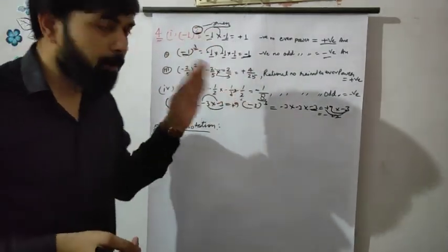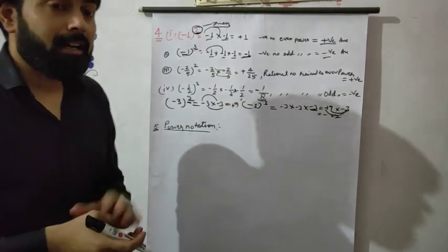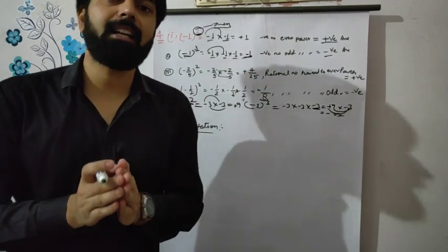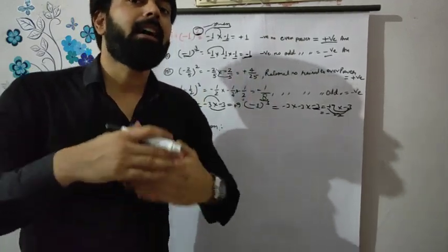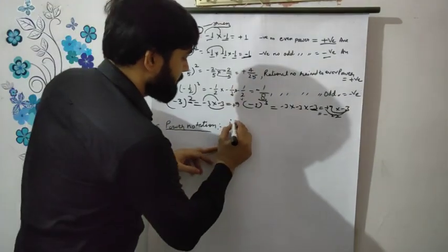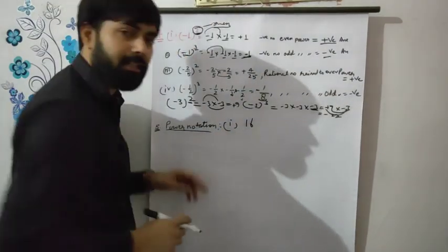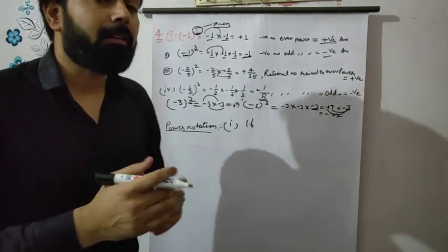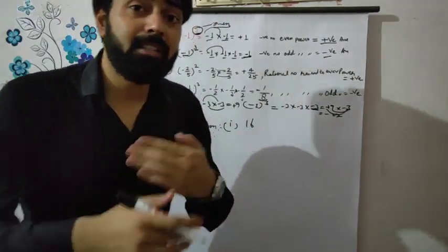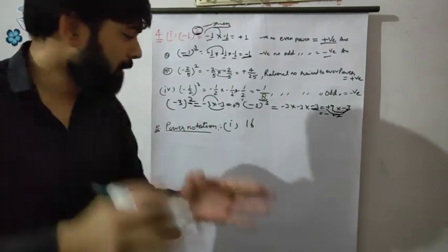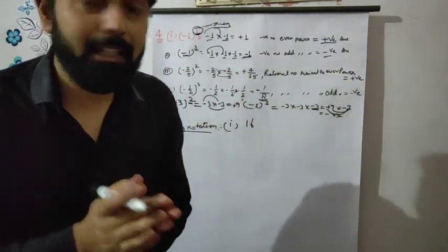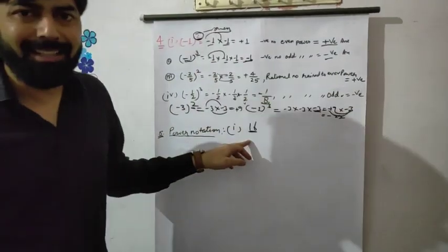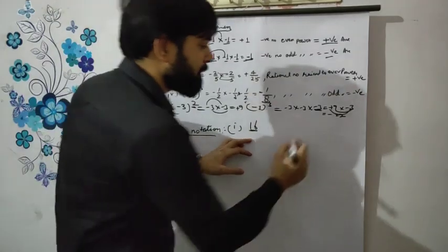This is very important, keep it in mind. Now next: how to convert any integer or whole number into power notation. For example, if you have 16, how can you convert 16 into power notation — exponential form? We can write it in exponential form using the LCM method. First we find the LCM of the given number, which here is 16.